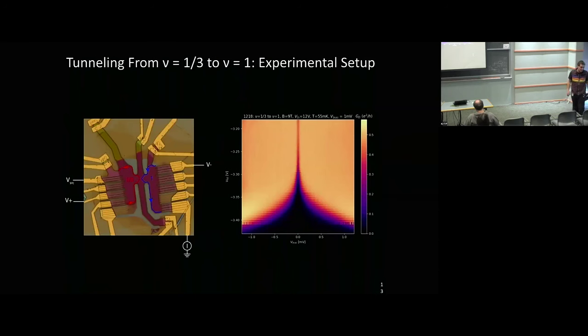We've created a situation where we have a nu equals one-third edge on one side and a nu equals one edge on the other, with a bias applied across. At low bias, you see suppression of conductance across the device. At high bias, you see a large conductance that saturates to a value of one-half — 50% larger than the one-third conductance you'd naively expect from having nu equals one-third in series with nu equals one.